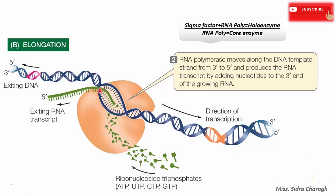The transcription bubble moves down the DNA, leaving the growing strand protruding from the bubble. The RNA polymerase moves along the DNA template strand from the 5' to 3' direction and produces the RNA transcript by adding nucleotides to the 3' end of the growing RNA.